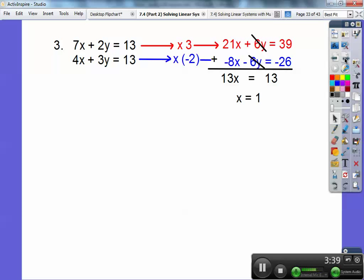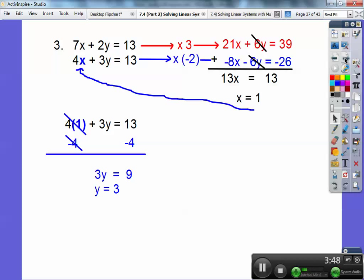Plug x into any one of those. I like the smaller ones, so I'll plug it in right there. So 4 times 1 is 4, so I'm going to subtract 4 from both sides and get 9. So 3y equals 9, y equals 3. Remember, x always comes first.